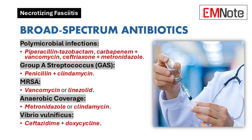Broad-spectrum antibiotics used to treat necrotizing fasciitis are selected based on infection type. For polymicrobial infections: piperacillin-tazobactam, a carbapenem combined with vancomycin, or ceftriaxone with metronidazole. For Group A Streptococcus infections: penicillin combined with clindamycin. For MRSA infections: vancomycin or linezolid. For anaerobic infections: metronidazole or clindamycin. For Vibrio vulnificus infections: ceftazidime combined with doxycycline.